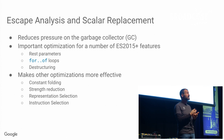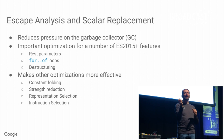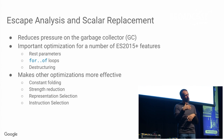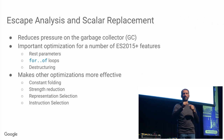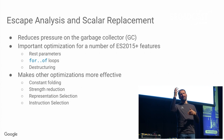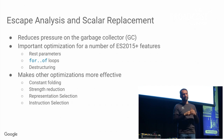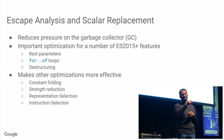In summary, escape analysis and scalar replacement can greatly reduce the pressure on the garbage collector because it has to do less work. It's an important optimization for a number of ES6 features — as we've seen for rest parameters, but also for for-of loops, where you need to create iterator result objects on every iteration. Depending on what you iterate, that's quite a lot of overhead we can remove under the hood. Similarly for destructuring. It also makes other optimizations like constant folding, representation selection, and instruction selection a lot more powerful.